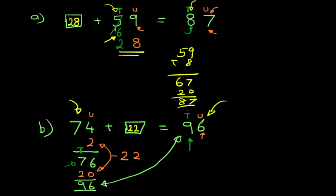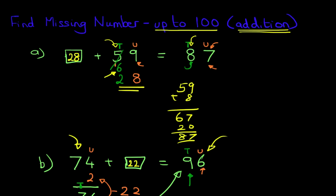So, it's simply adding on until we get to the number after the equal sign. That is how we find the missing number for numbers up to 100 for addition questions.